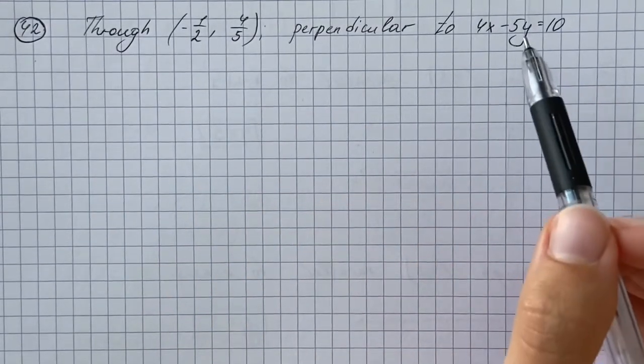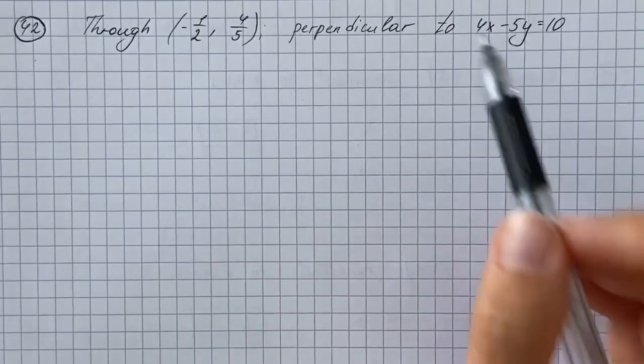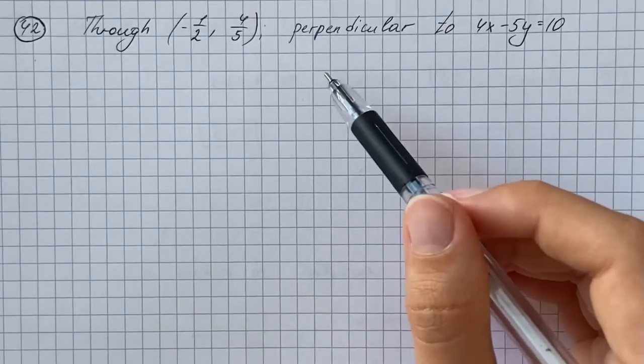If some line is perpendicular to another line, then their slopes are opposite reciprocals.